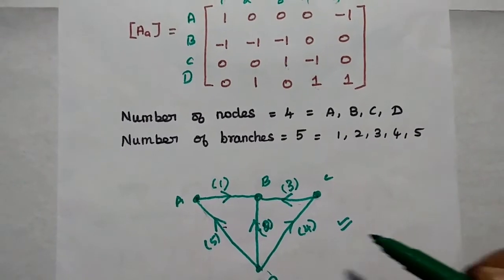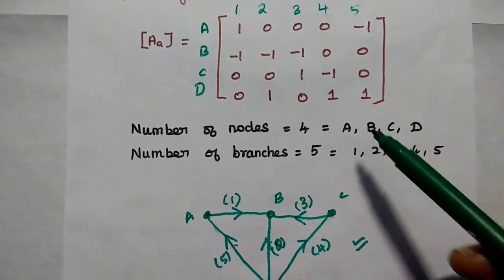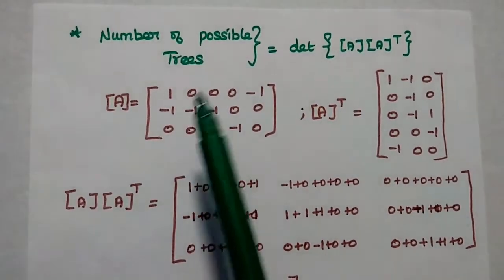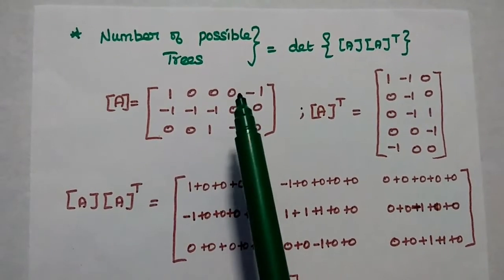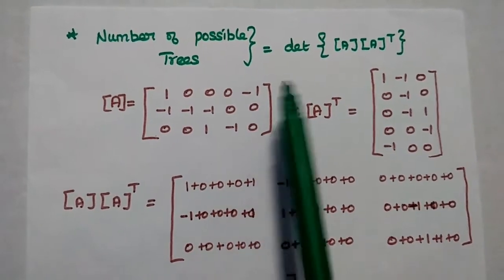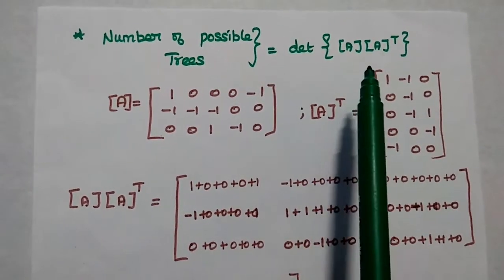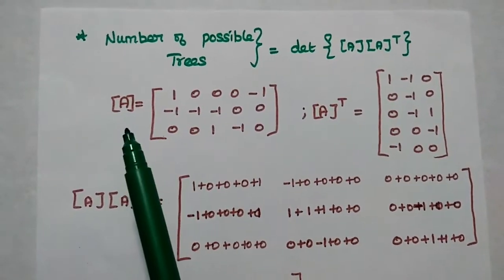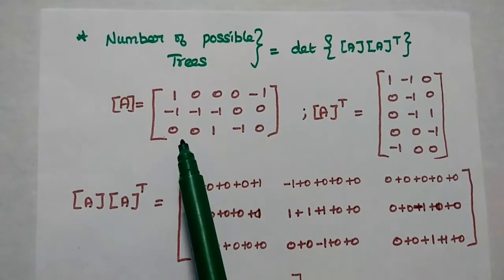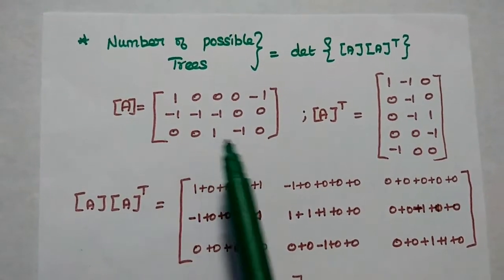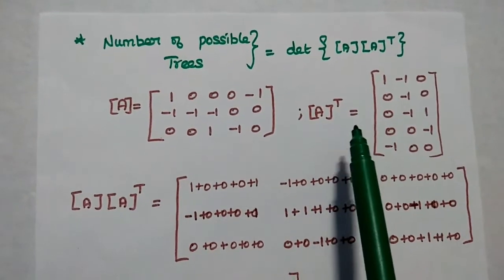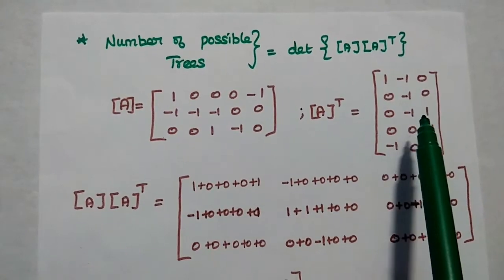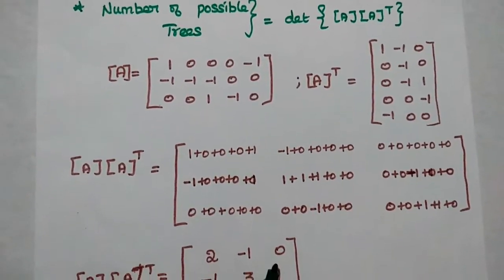This is the oriented graph for the given reduced incidence matrix. Next, we are going to find the number of possible trees for the given network. That can be obtained using the formula: determinant of A multiplied by its transpose, where A matrix is the reduced incidence matrix. The transpose is obtained by interchanging rows to columns and columns to rows.